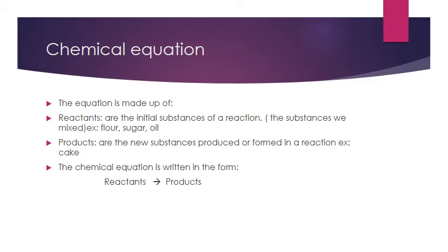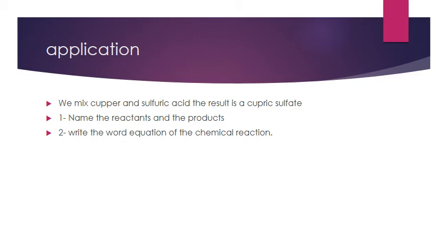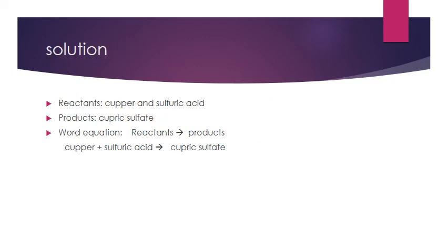How to write the word equation of this reaction? We write it in the form: reactant, then an arrow, then the product. Application: we mix copper and sulfuric acid, and the result is copper sulfate. The reactants, by definition, are the substances we mix — in this case, copper and sulfuric acid. What we obtain by this reaction is copper sulfate, so copper sulfate is the product. The equation is written as: copper + sulfuric acid → copper sulfate.